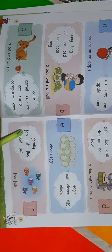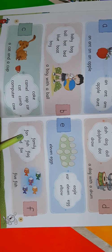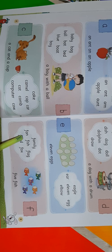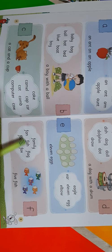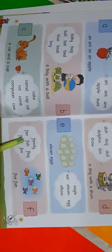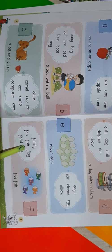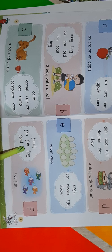Now come to the next word: F-A-N, fan. F-A-N, fan. Repeat once again: F-A-N, fan. Next word is F-I-S-H, fish. F-I-S-H, fish. F-I-S-H, fish.